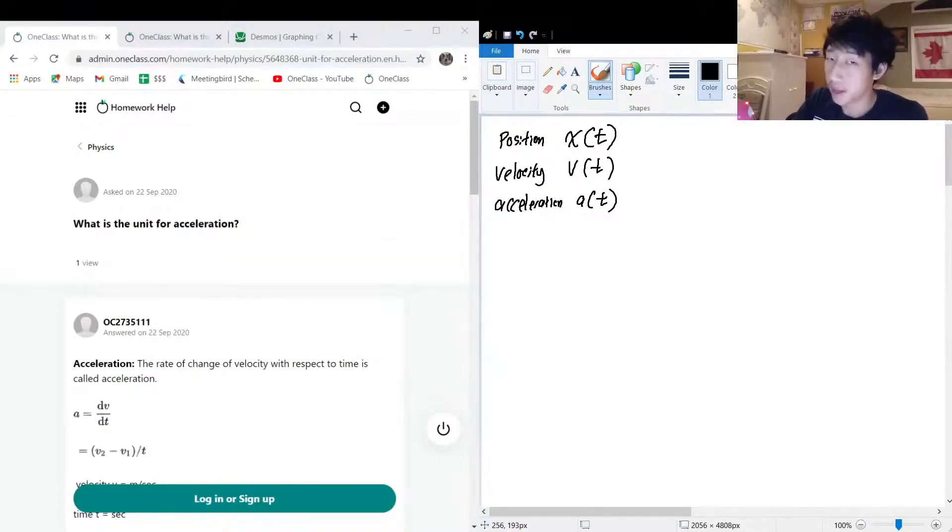You can't necessarily guarantee that any one of these three things are going to be the same at different points in time. Like my position right now could be at position zero, but you know I take a step back and at time equals one second I'm one step backwards.